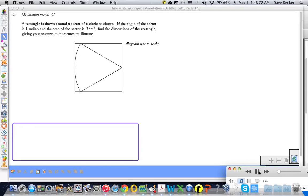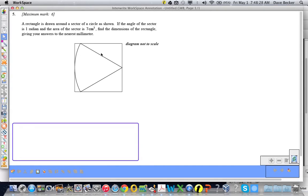Solution to exam jam number three. We have a rectangle drawn around a sector of a circle, and the angle of the sector is one radian. That angle is one radian and the area is seven square centimeters. Find the dimensions of the rectangle to the nearest millimeter. Don't forget that - you will lose an easy point.